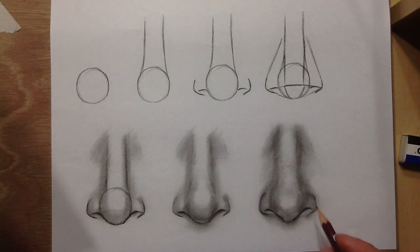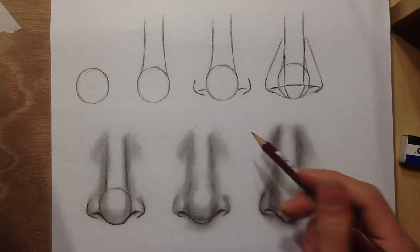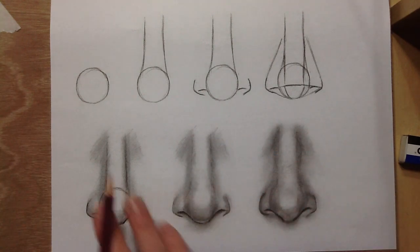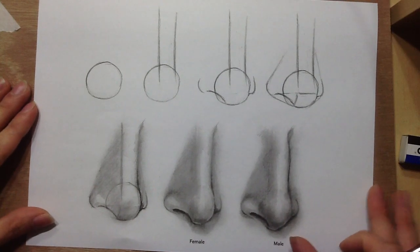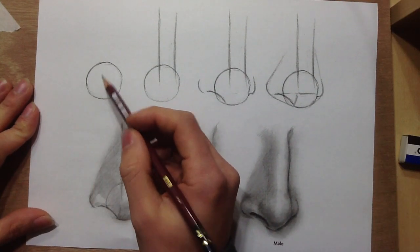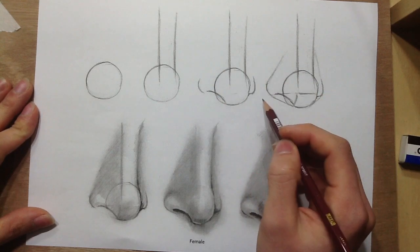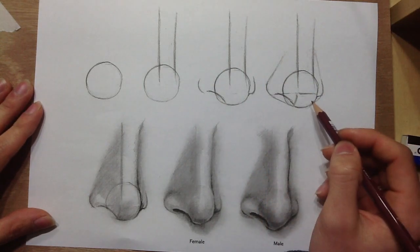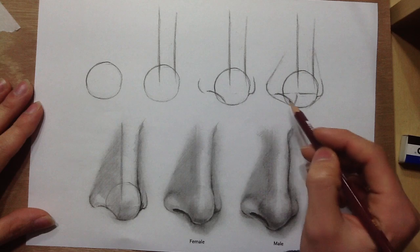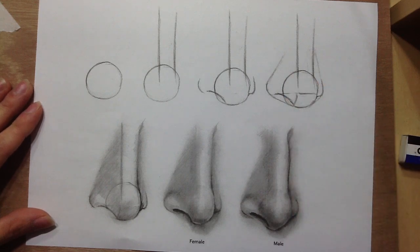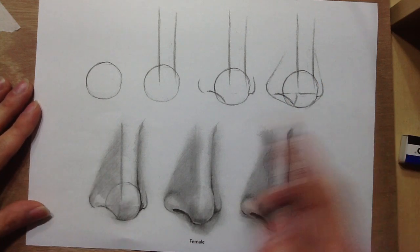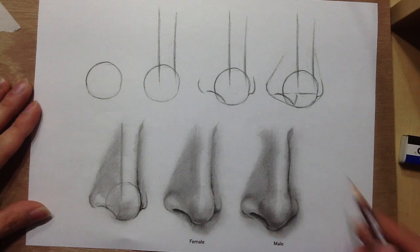And this process can also be applied to drawing the nose from a three-quarter view. Right here, I've done the same thing for a three-quarter view. You draw a circle, you draw the two lines, and you add the nostrils to the sides. You can keep it simple, or you can add more guidelines to help, whichever works best for you. And then you just shade it. It's quite simple.